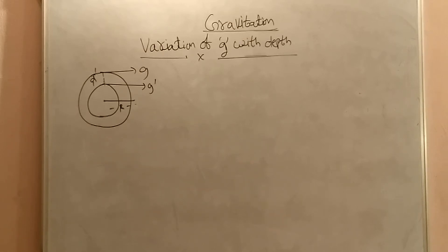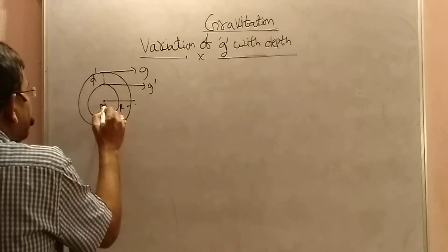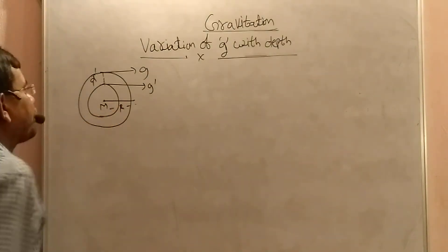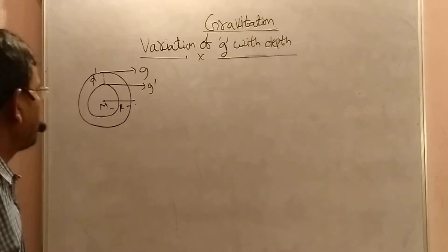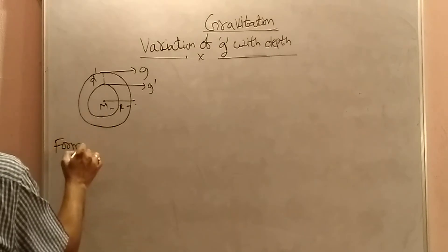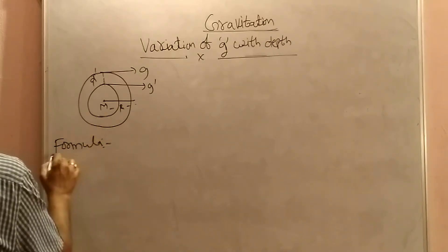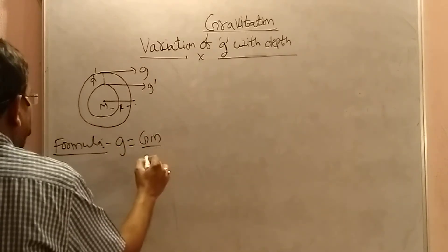We are discussing the variation of g with depth. Here R is the radius of the earth and M is the mass of the earth. When we are on the surface of the earth, that is the g value. What is the formula for g? Acceleration due to gravity is equal to GM by R squared.